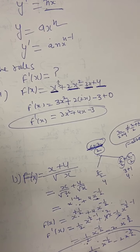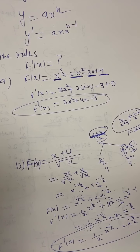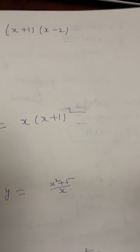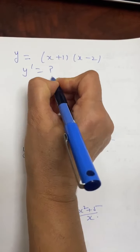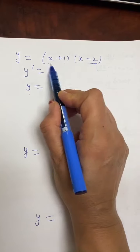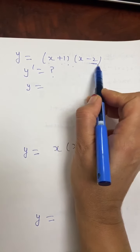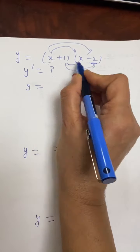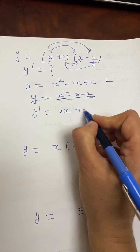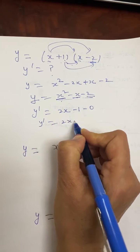So f'(x) equals one-half x to the power of negative one-half minus 2x to the power of negative three-halves. The next question asks for the derivative of y equals (x plus 1)(x minus 2). First, expand the bracket: x times x is x squared, x times negative 2 is negative 2x, 1 times x is x, and 1 times negative 2 is negative 2. Collecting like terms: y equals x squared minus x minus 2. So y' equals 2x minus 1.